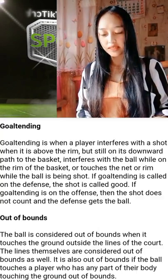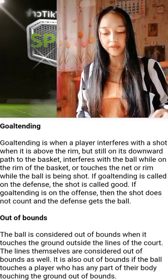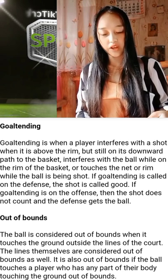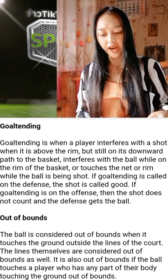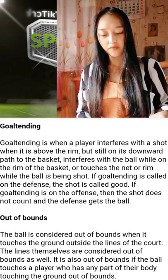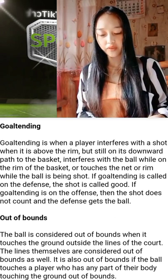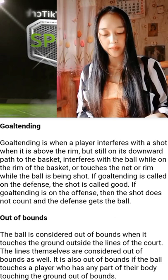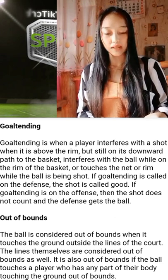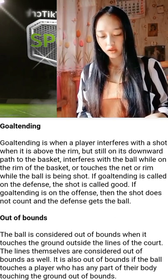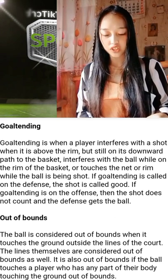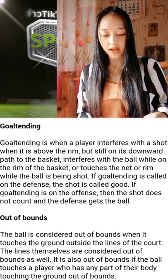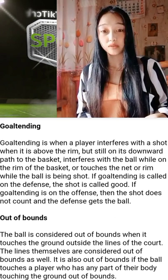The next is goaltending. Goaltending is when a player interferes with a shot when it is above the rim or on the way down toward the basket, or interferes with the ball while it is on the rim of the basket. The shot is called good and the goaltending violation is only called on the defense. Then the shot does not count and the defense gets the ball.